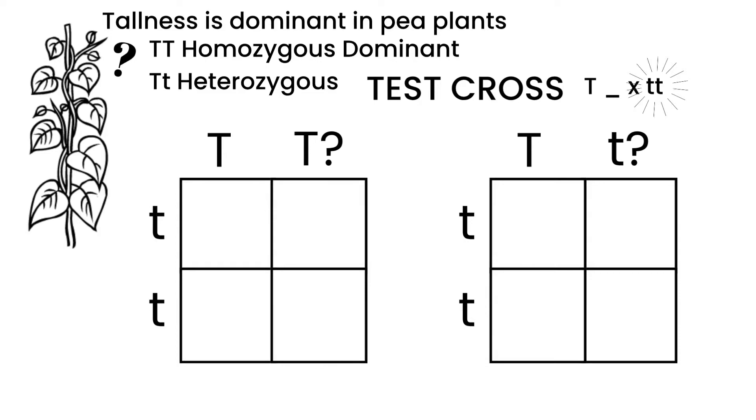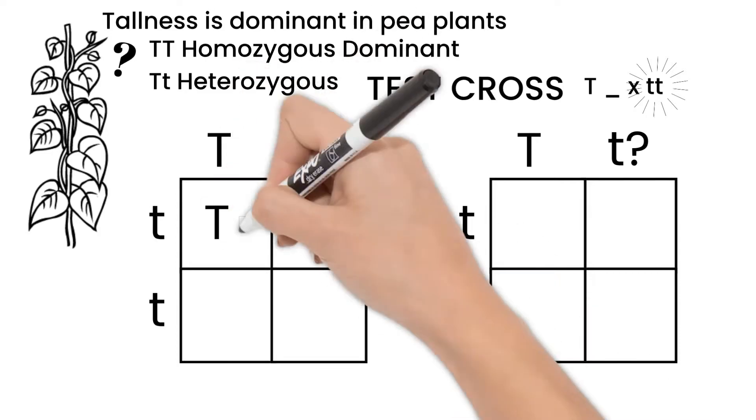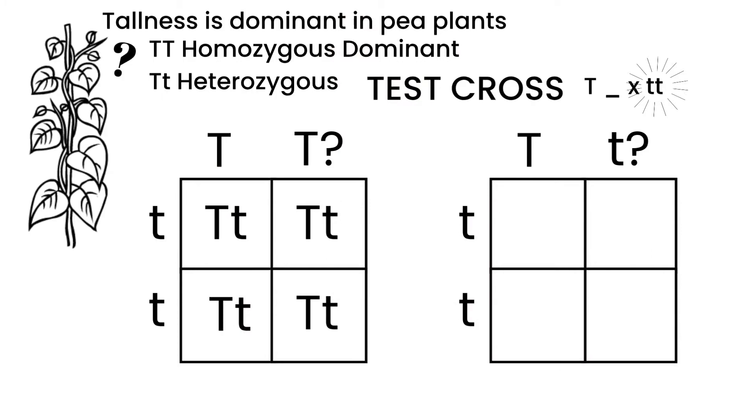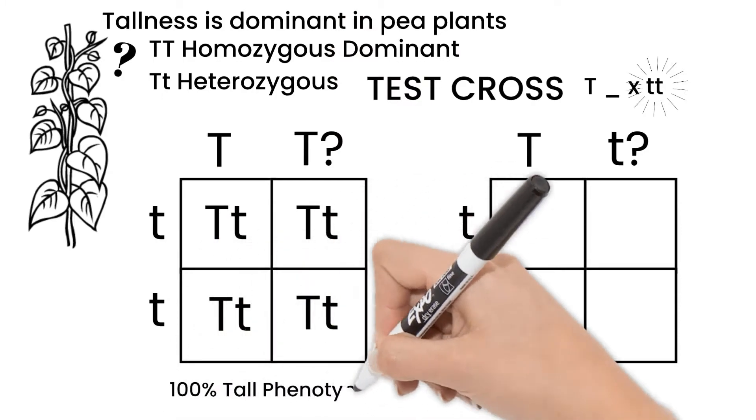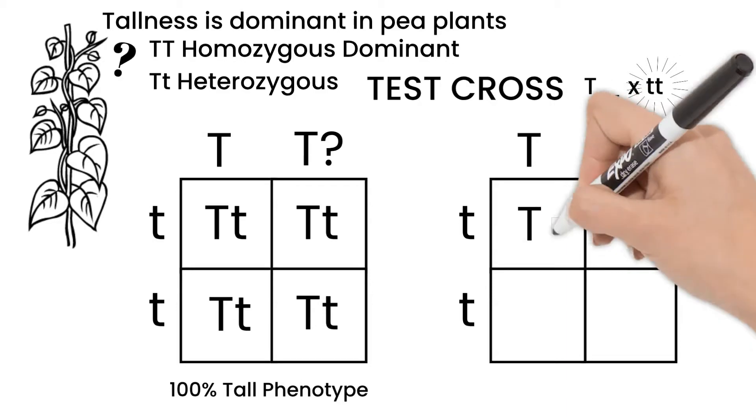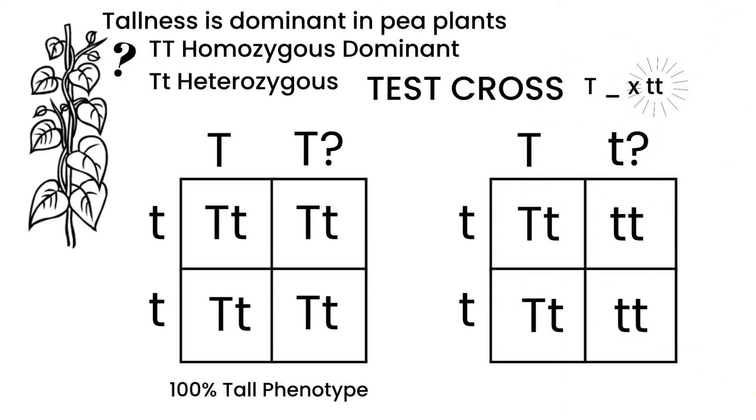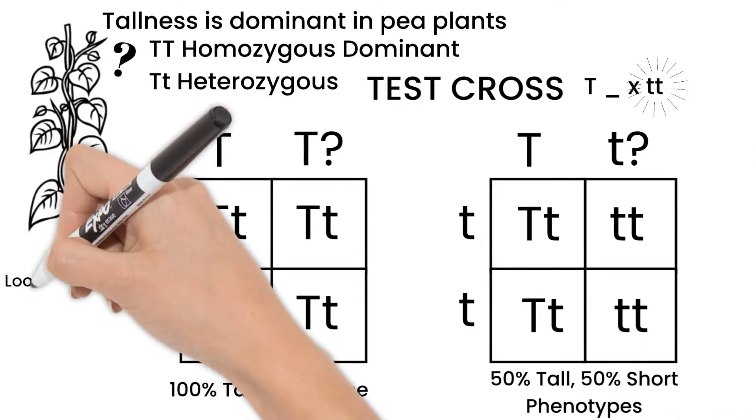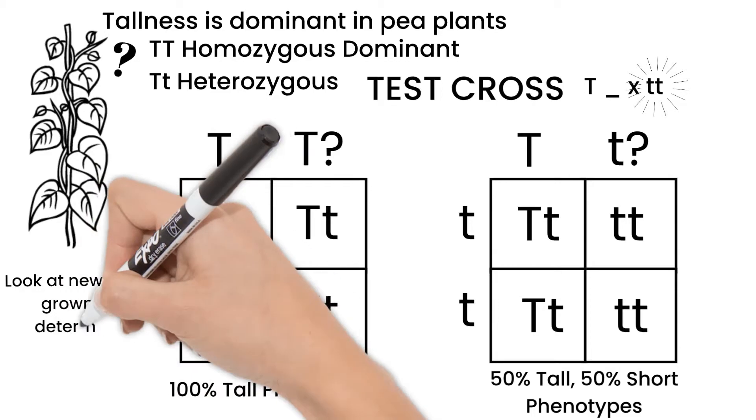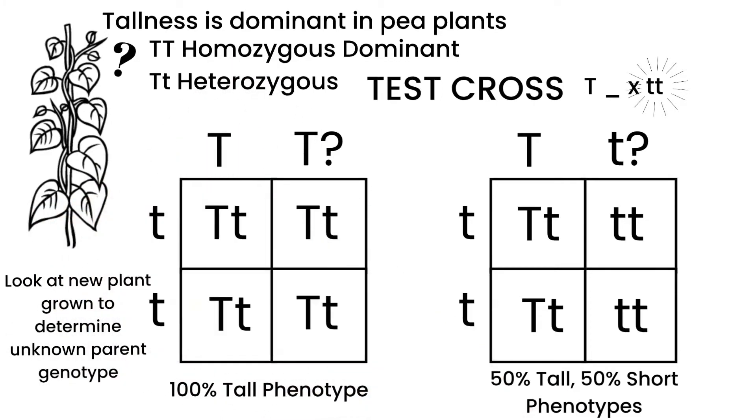If our pea plant is homozygous dominant and we crossed it with a short plant, all of the new pea plants would be tall. If our plant is heterozygous, then half the new plants would be tall and half short. By looking at the F1 plants grown from our cross, we can determine the genotype of our pea plant.